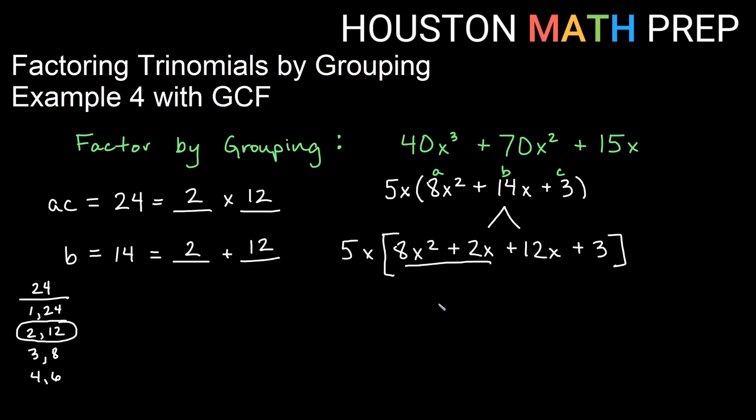So here if I'm looking at grouping, then I would have, pulling out from the first half, 2x. Left over in the first half, I would have 4x plus 1. Now I should be able to find that 4x plus 1 in the second half, so I write it down again, 4x plus 1.